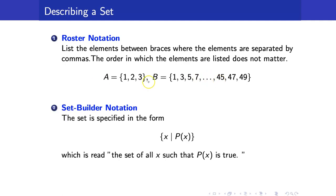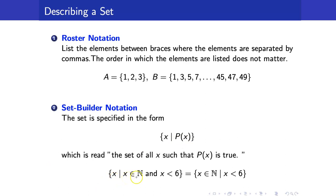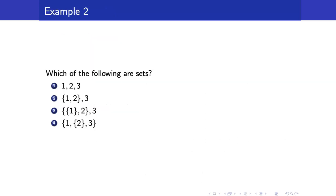Sometimes it will not be easy to write sets in roster notation because we will not be able to list all the elements. In that case, we use the set builder notation, written as: the set of all x such that P(x) is true. For example, the set of all x that are natural numbers and x is less than 6, written more concisely as the set of all natural numbers less than 6. In roster notation, this is just {1, 2, 3, 4, 5}.